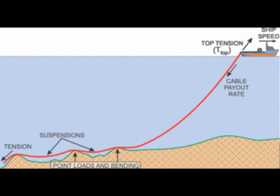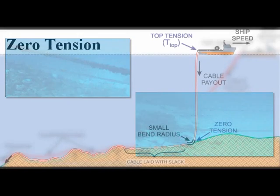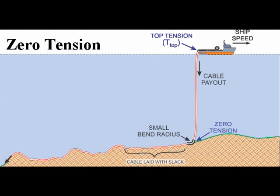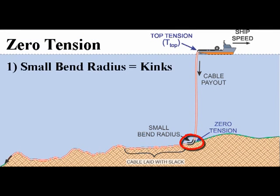Here are some examples of cable suspensions. Installing a cable with zero tension will result in a small bend radius at the touchdown point, potentially causing the cable to be damaged by kinking it.